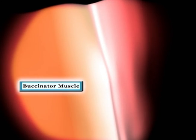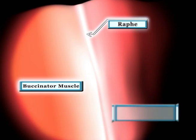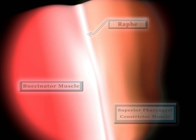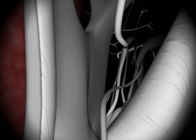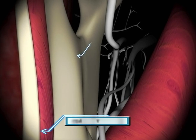Soon after penetrating the mucosa, we are into the buccinator muscle, just lateral to the actual raphae, which connects the buccinator muscle to the more medial superior pharyngeal constrictor muscle. A few millimeters later, we see the deep tendon of temporalis attaching to the medial aspect of the mandibular ramus.